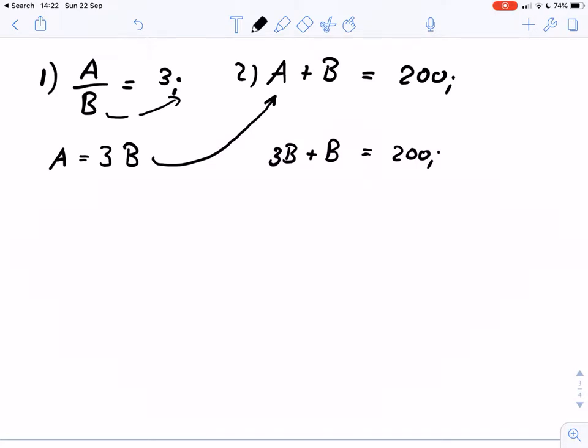And 3B plus B, that of course gives us, we can write this as B(3 plus 1) equals 200, or we can write this as 4B equals 200.